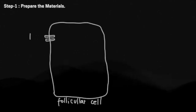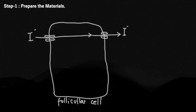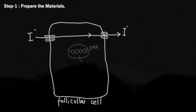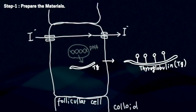Step 1. Prepare the ingredients. Let's take in iodine into the cells and transport thyroglobulin synthesized in follicular cells to the colloid.